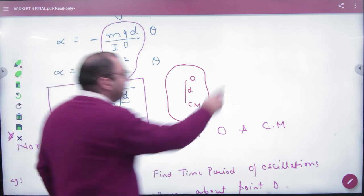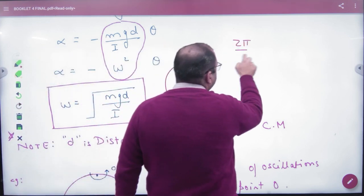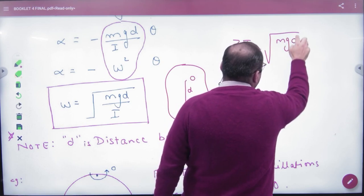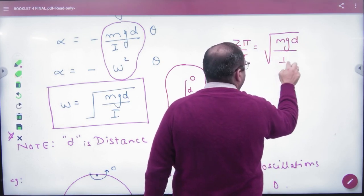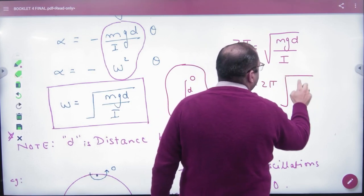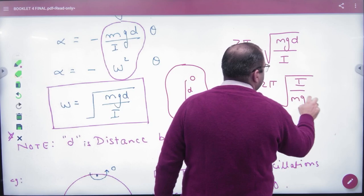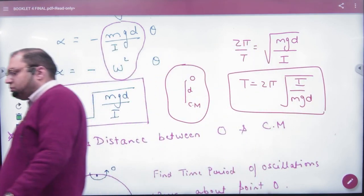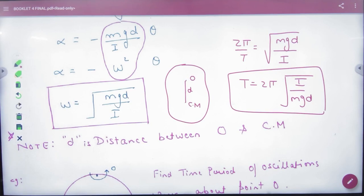Next line, I will write omega. 2π by T is equal to mgd divided by I. So T equals 2π square root of I divided by mgd. This formula you will note. T equals 2π square root of I by mgd.